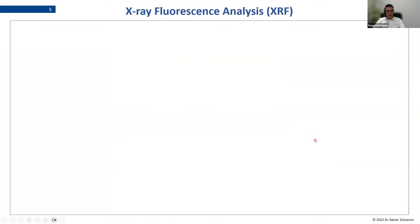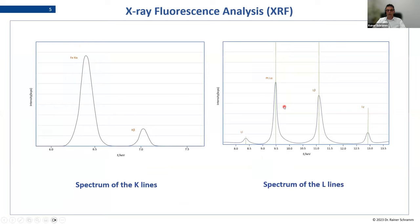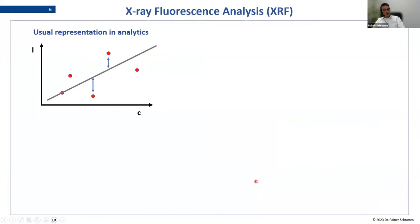A typical spectrum will look like this: for iron you would see a K alpha line and a K beta line, with a difference of around a factor of five between the lines. For an L pattern, like platinum, you see four peaks at different heights which define a typical L pattern. The intensity in energy-dispersive XRF comes from the area (surface) of the peak, while in wavelength-dispersive XRF it comes from the height of the peak. Both are called intensity, and for both all following models are the same — there is no difference between the two technologies.